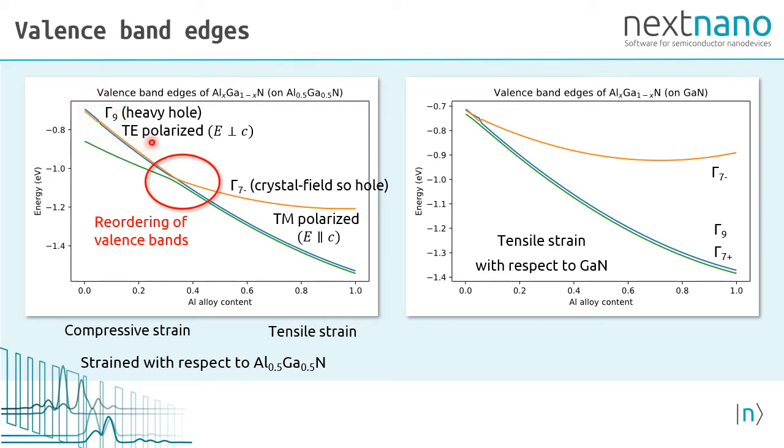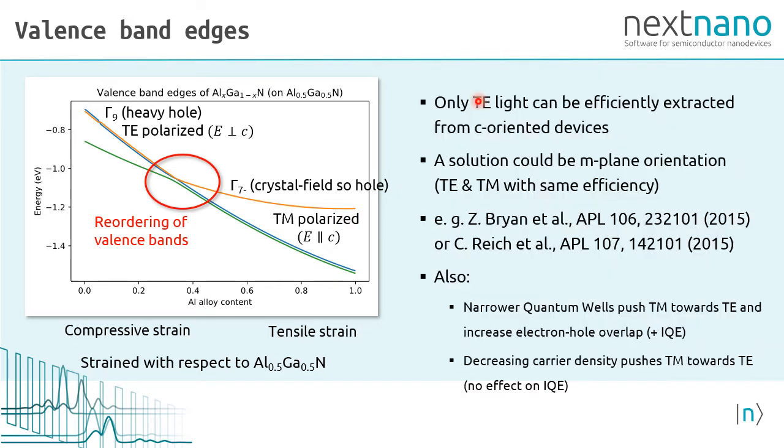On the left side, we have the gamma 9 band as the uppermost band, so we have TE-polarized photons. In this regime, for high aluminum content, we have TM-polarized light.